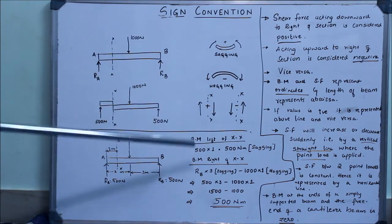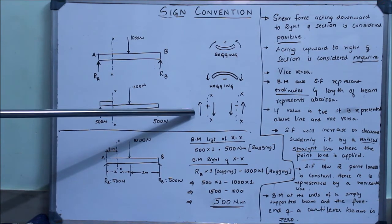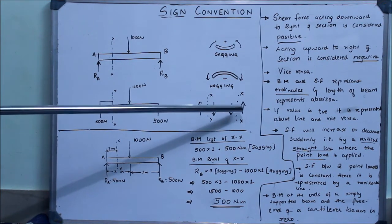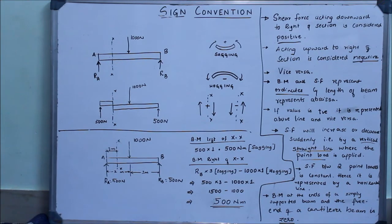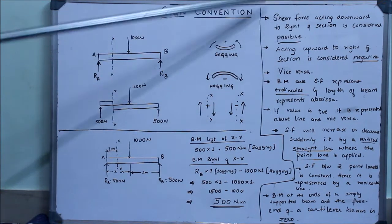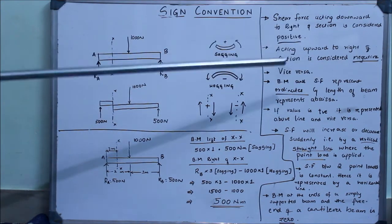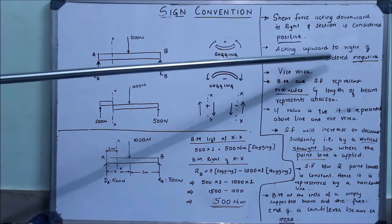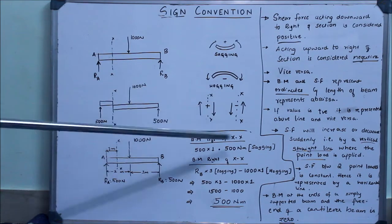This part is the most important: to the right of the section, if the force is acting downward it is positive. If you consider the left of the section and the forces are acting upward, it is positive. To the right of the section, if they are acting upward it is negative. And to the left of the section if they are acting downward it is again negative. These are the sign conventions for shear force that you need to remember while drawing the SFD and BMD.